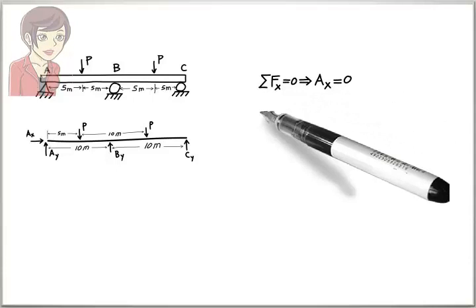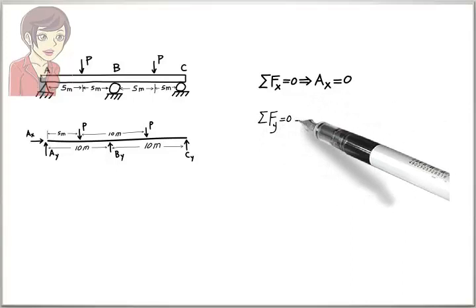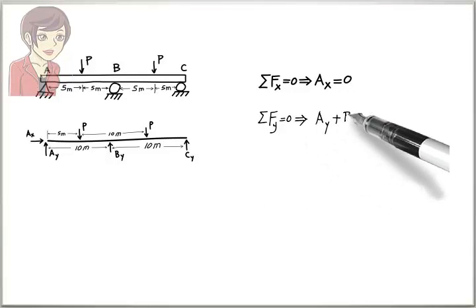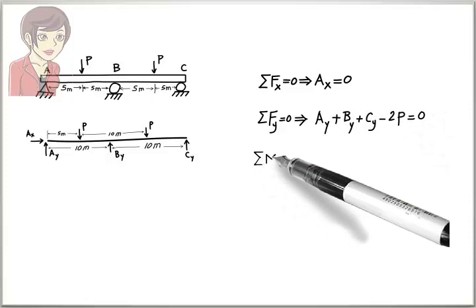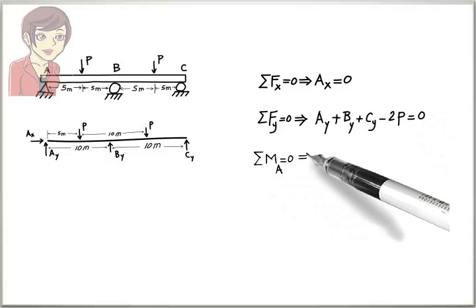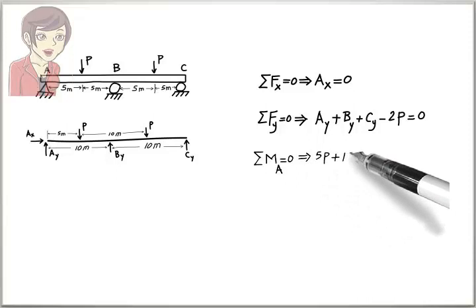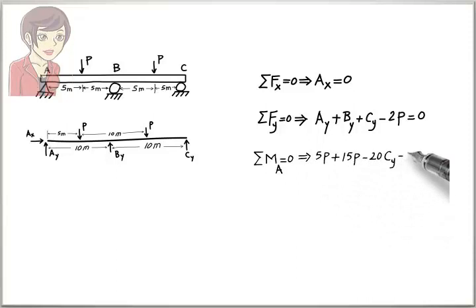Ay plus By plus Cy minus 2 times P equals zero. 5 times P plus 15 times P minus 20 times Cy minus 10 times By equals zero. Notice that we have four unknowns, but only three equations.